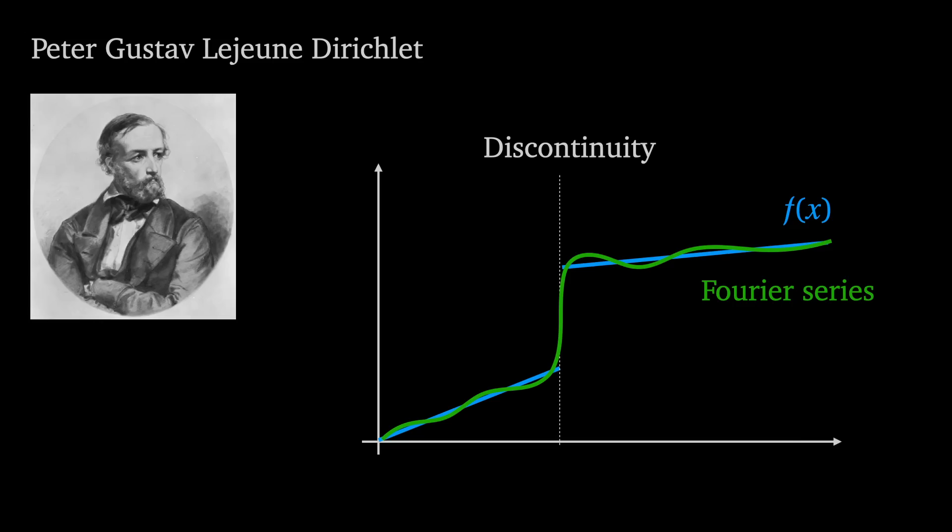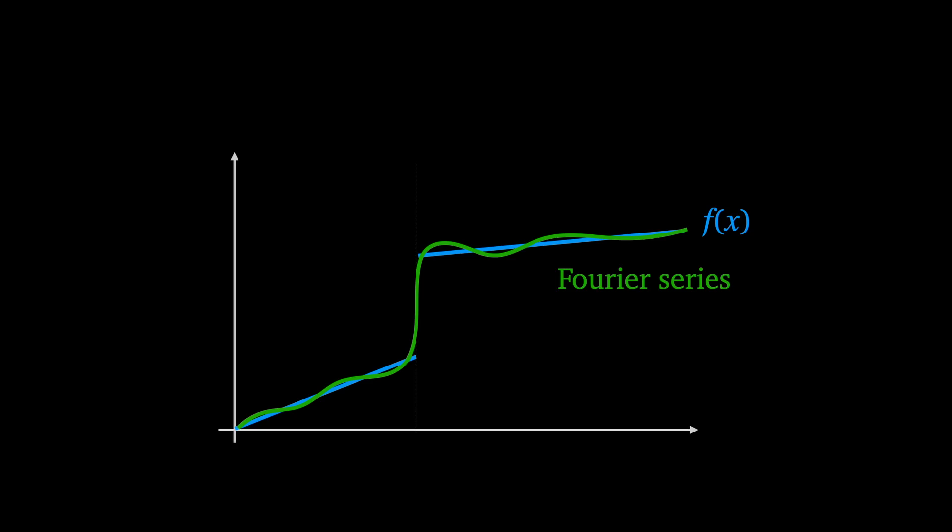Then in 1829 Dirichlet found the answer. If some piecewise continuous function f has a discontinuity at point x0 then its Fourier series converges to the average of the limit as f approaches x0 from the left and from the right.